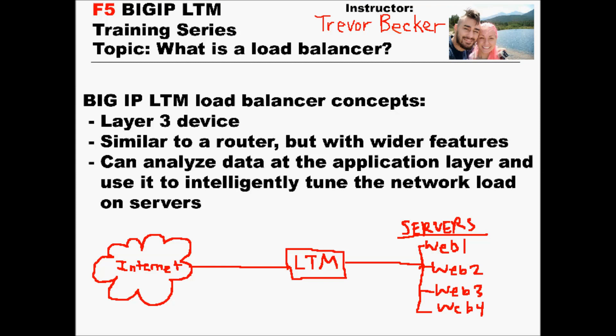The Big IP LTM load balancer at its very core is a layer 3 networking device. It is similar to a router, but the Big IP LTM system can do way more than just a basic router. A layer 3 device first accepts a packet and then analyzes the IP header. It adds a connection to its connection table, inspects the access control policies on the device, and makes a routing decision based off of all that data.